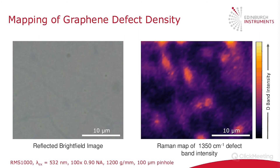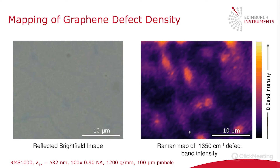An example of this is shown here. On the left is a white light image of the graphene surface — a reflected bright field image using white light illumination. You can see that on the white light image, the graphene is very featureless; it's almost impossible to characterize graphene using traditional optical microscopy. However, in the Raman image, the microscope is scanned across the graphene surface and the intensity of the 1350 wavenumber peak is integrated, corresponding to defects.